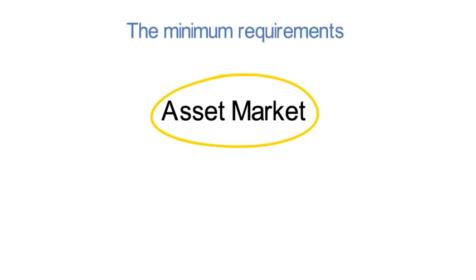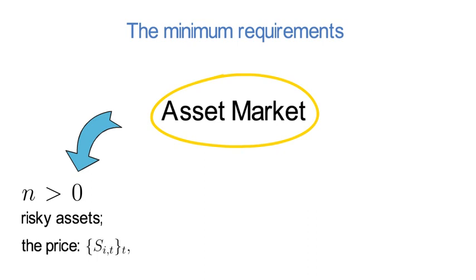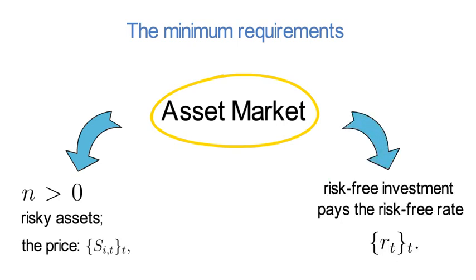The minimum requirement for an asset market is to have n larger than zero risky assets. The price process of a risky asset is denoted as S_it. The second minimum requirement is that there is a risk-free investment out there that pays the risk-free rate r_t. Let's turn to the risk-free rate first, and after that I'll say some words about the risky assets S_it.